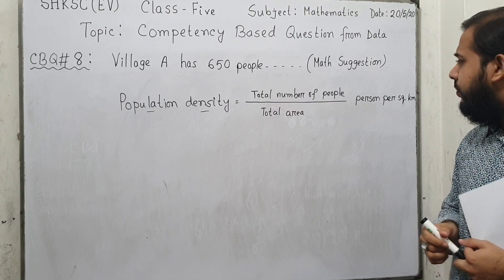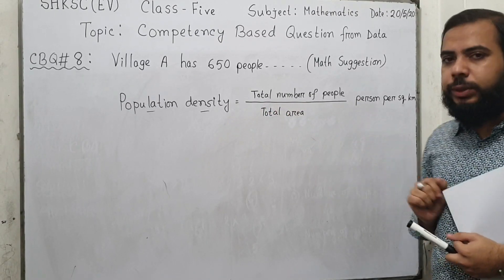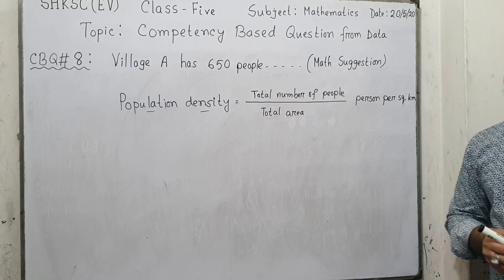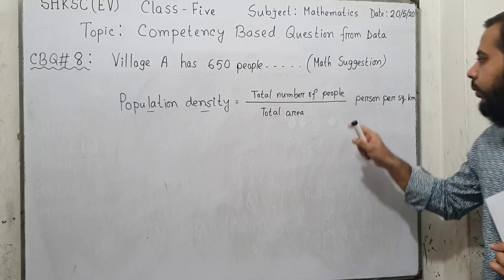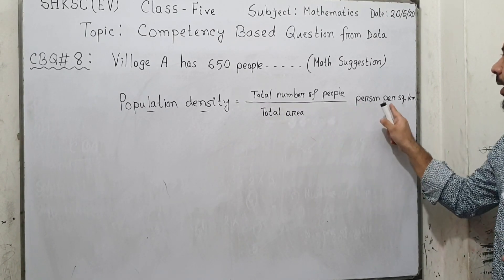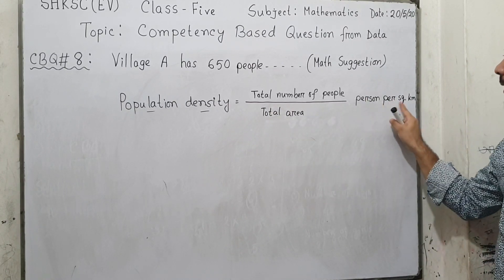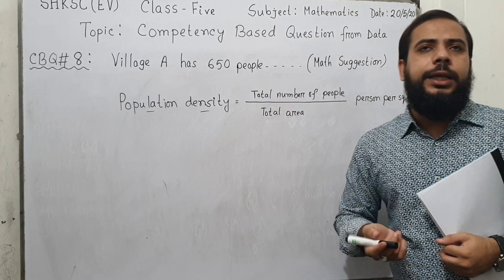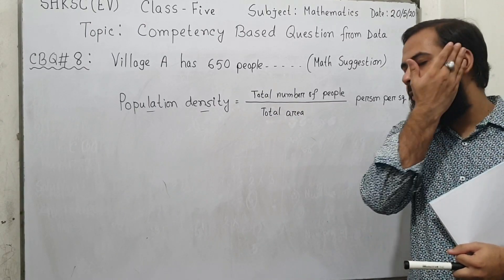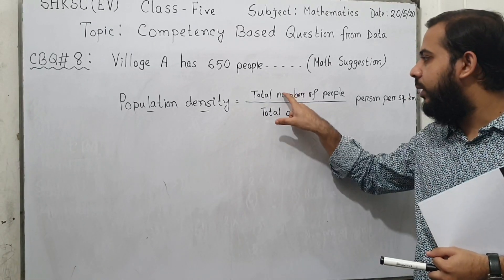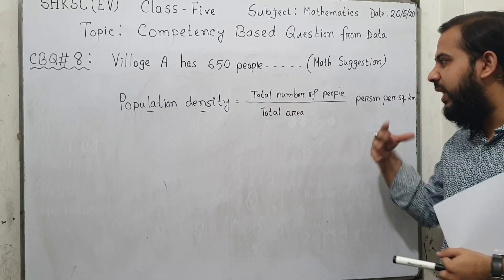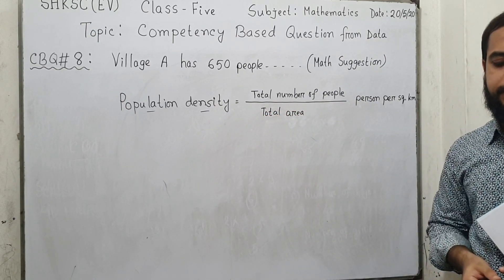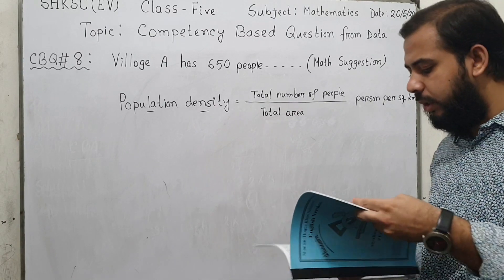The unit of population density is persons per square kilometer, because the total area is given in square kilometers. When we divide the number of people by area, the unit becomes persons per square kilometer. Simply put, population density tells us how much area is needed for each person to live — that is called population density.